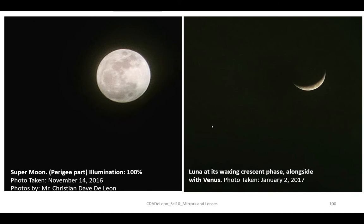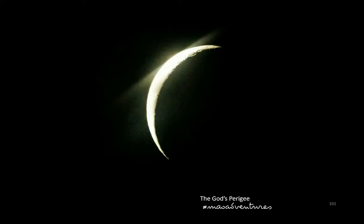This photo was taken by Mr. Christian Dave De Leon. The first picture is the super moon, photo taken November 14, 2016. The second photo is the moon on its waxing crescent phase alongside Venus, taken January 2, 2017. And this is my photo entitled 'The God's Perigee.'